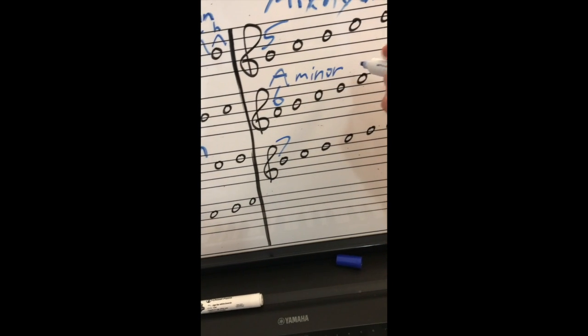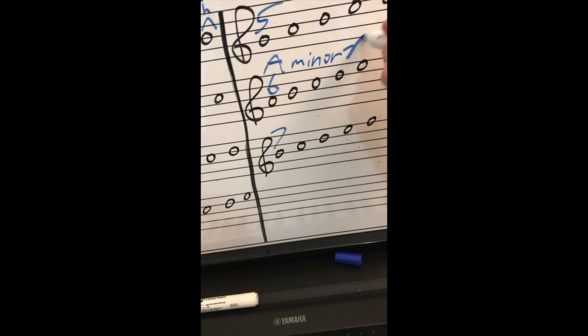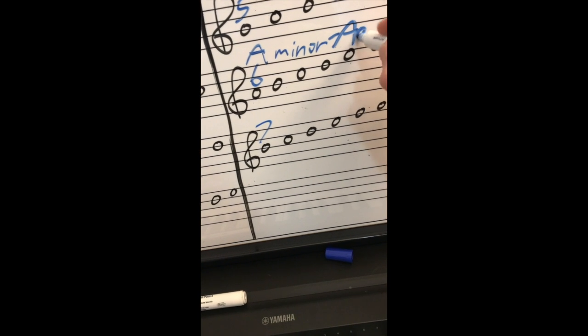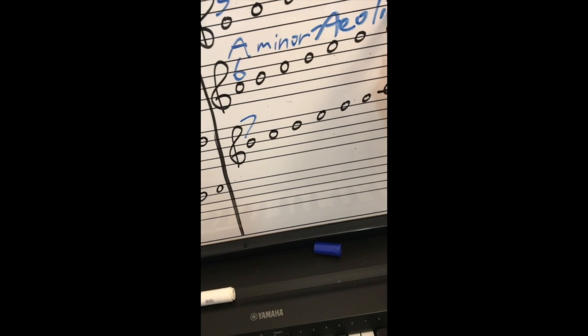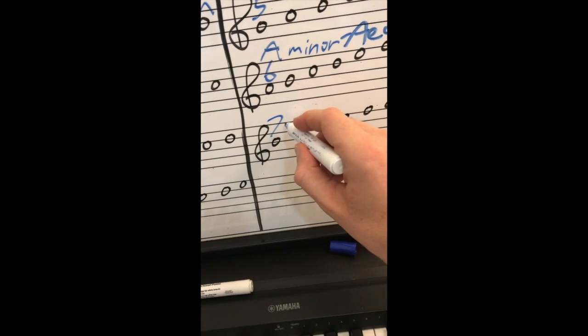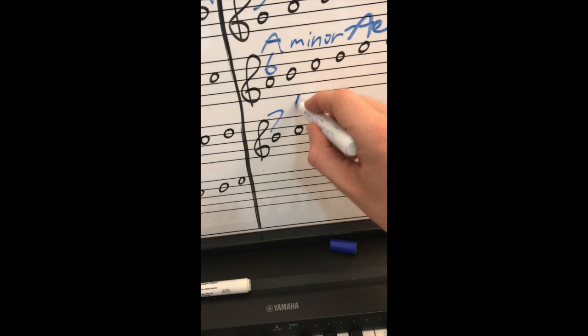The modal name of minor is actually Aeolian. And when you start on the seventh degree, it's called Locrian.